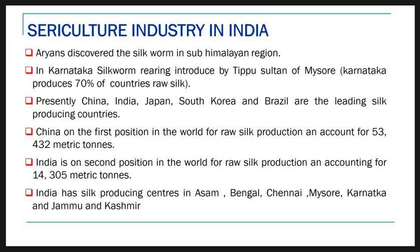Presently, China, India, Japan, South Korea and Brazil are the main leading silk-producing countries. China holds the first position in the world for raw silk production, accounting for 53,432 metric tons. India is in second position, accounting for 14,305 metric tons.